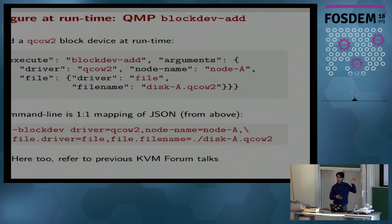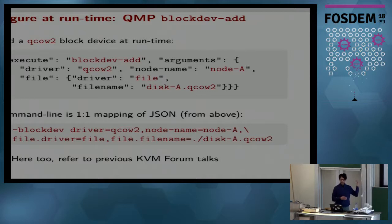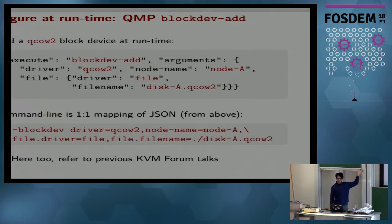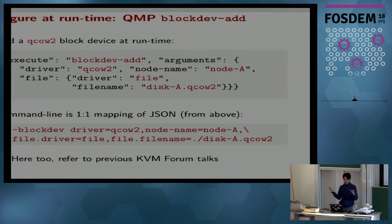The blockdev-add runtime command is fairly uninteresting on its own — you run a simple JSON structure command to add a QCOW2 block device. What is nice is that in recent changes to QEMU's block layer, the command line equivalent of the JSON is just a one-to-one mapping of the raw QMP. If you squint your eyes and look at the options on the command line, it's a direct tree-like mapping. Most of this is done during testing and development, not by hand in production.